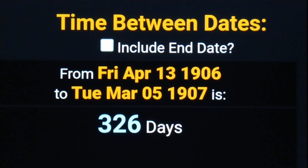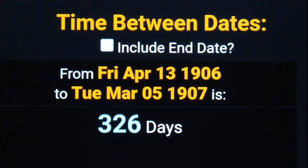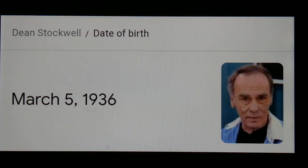From the date of birth of the real Samuel Beckett — April 13th, 1906 — going forward 326 days brings us to March 5th. And March 5th is, of course, the birthday of Dean Stockwell.